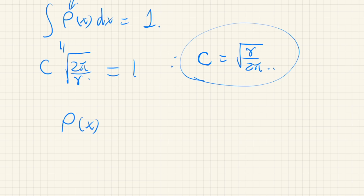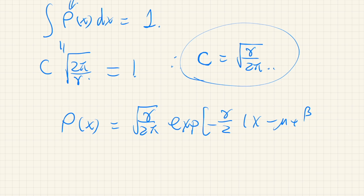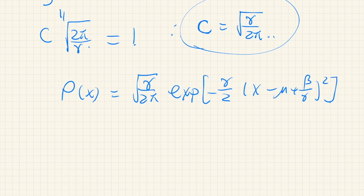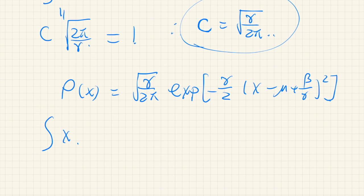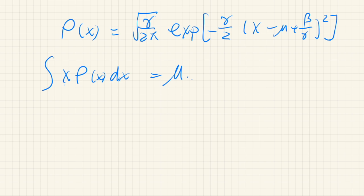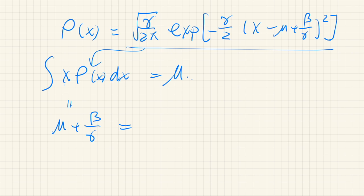So the density is ρ(x) = √(γ/(2π)) · exp[−(γ/2)(x − μ + β/γ)²]. Now apply the mean constraint: integral of x·ρ(x) dx = μ. Evaluating this Gaussian integral gives μ + β/γ = μ, so β/γ = 0, meaning β = 0, as expected.